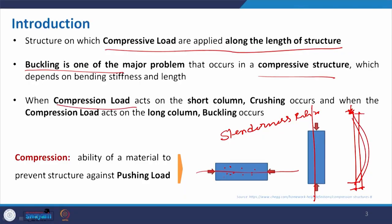When a compressive load acts on a short column, crushing happens. For a long column, buckling will happen. What is a short column versus a long column? A short column is where the proportion between length and cross section is not that high. A long column is where the length is considerably higher than the cross section. Considering two thermocol pieces I have here — one very short column and one a bit longer — you can see that the cross sections are the same but the lengths differ.